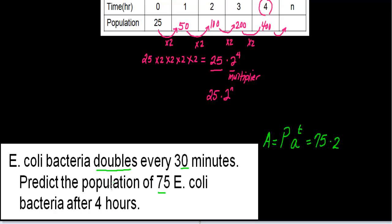And then my exponent: since I want to know how many bacteria I'll have at the end of 4 hours, and this bacteria doubles every 30 minutes, how many intervals of 30 minutes do I have in 4 hours? For each hour, I will have 2 thirty-minute intervals. So for 4 hours, I will have a total of 8 thirty-minute intervals. So my exponent here has to be 8.